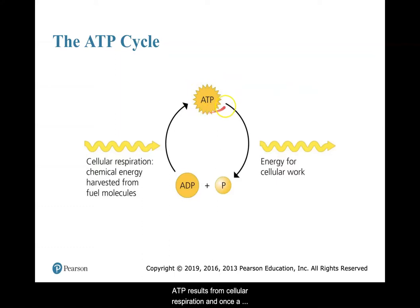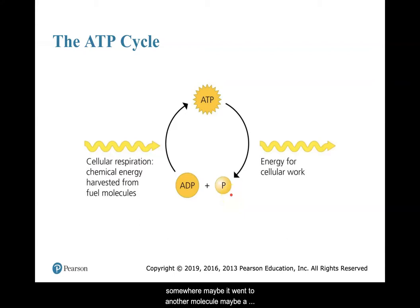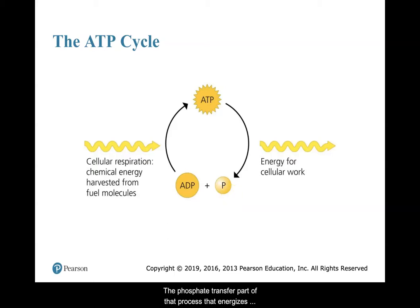Here I have ATP, which results from cellular respiration, and once a phosphate has been transferred, it's no longer adenosine triphosphate — tri for three. It's now adenosine diphosphate, di for two. There's that extra phosphate that got transferred somewhere — maybe to another molecule, maybe to a protein in order for that molecule to do work. It's the phosphate transfer part of that process that energizes work in the cell.